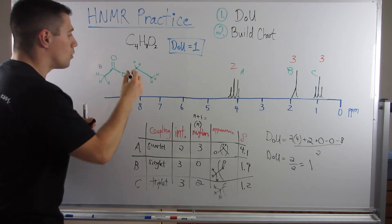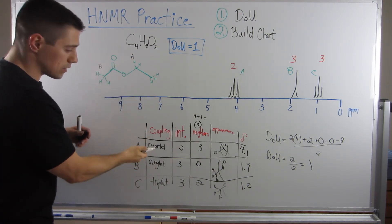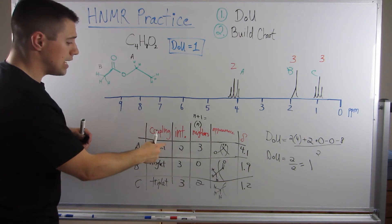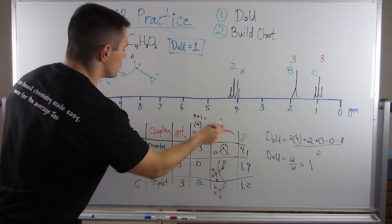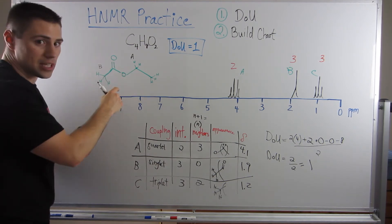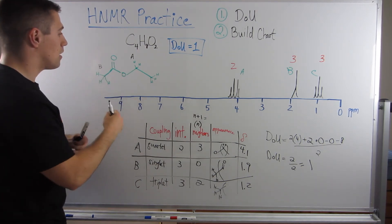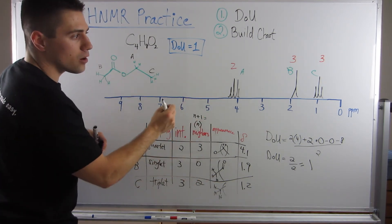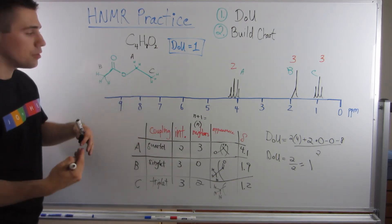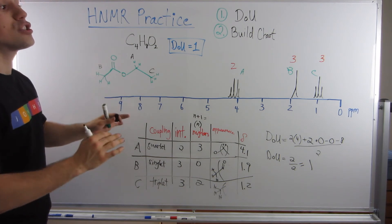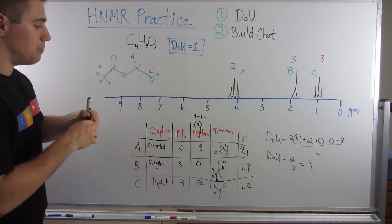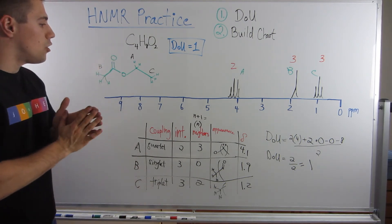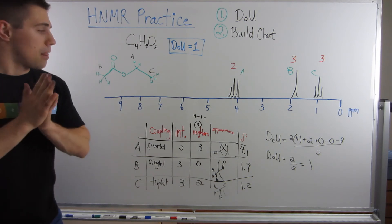Let's review: peak B — no neighbors, singlet, integration three, slightly downfield due to the adjacent carbonyl. Peak A — quartet (three neighbors plus itself), integration two, chemical shift 4.1 because it's alpha to oxygen. Peak C — triplet, integration three, ~1.2 chemical shift, classic terminal methyl with two neighbors. Everything checks out.